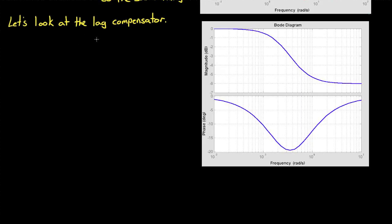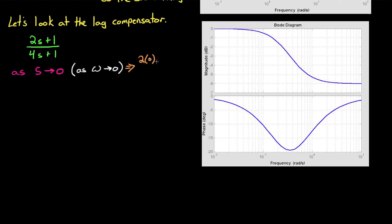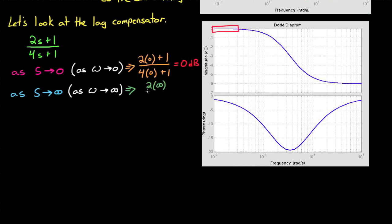Let's draw the Bode plot for a lag compensator and see how this is accomplished. Here's an arbitrary lag compensator, 2s plus 1 divided by 4s plus 1, and its corresponding Bode plot. Notice that when s approaches 0, or omega gets closer to 0, the magnitude of this lag compensator approaches 1 divided by 1, which is 0 decibels. At low frequencies the magnitude is 0 dB, and we want the DC gain to be 0 dB since we don't want to mess up our steady state error. Also as s approaches infinity, the magnitude approaches 2 divided by 4, or 0.5, which corresponds to minus 6 dB. It's this unity gain at low frequency and attenuation at high frequency that is exactly what we're looking for in our design problem.